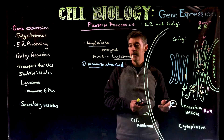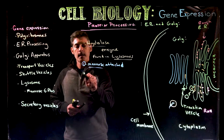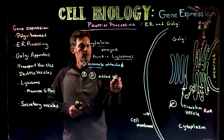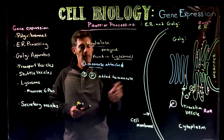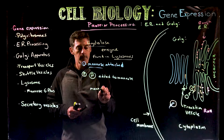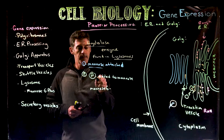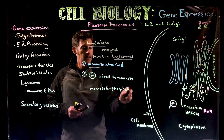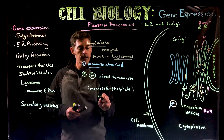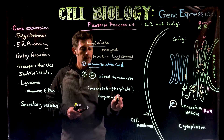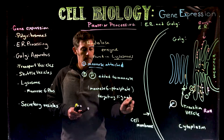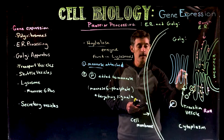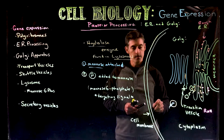Now in this particular case, there's going to be another modification. The second modification is that a phosphate is going to be added to the mannose. That creates something called mannose-6-phosphate, because the phosphate attaches to the number 6 carbon. Mannose-6-phosphate is really a targeting signal — it's like an address label saying this particular enzyme needs to go to a lysosome.